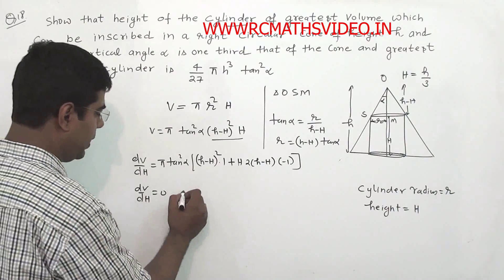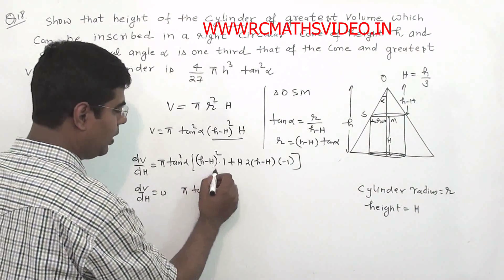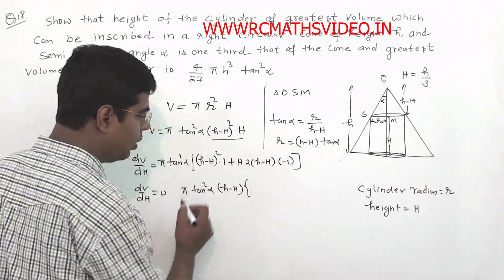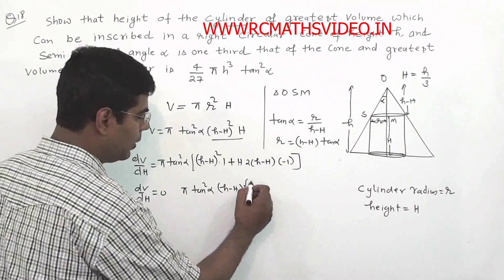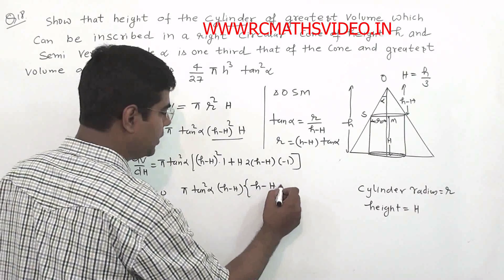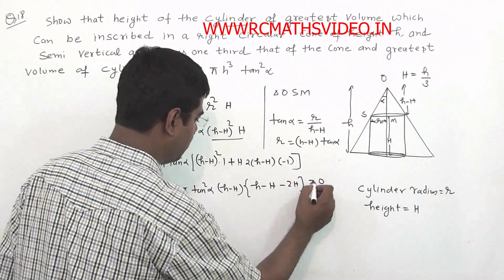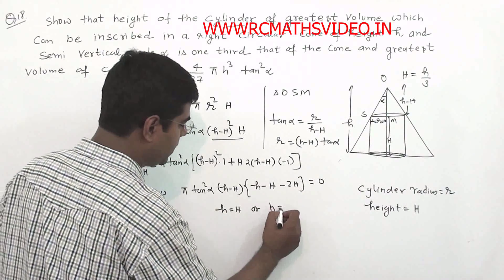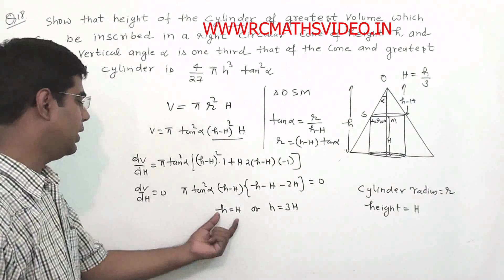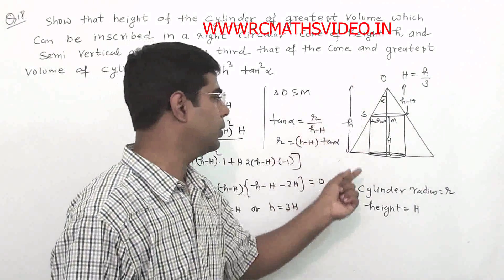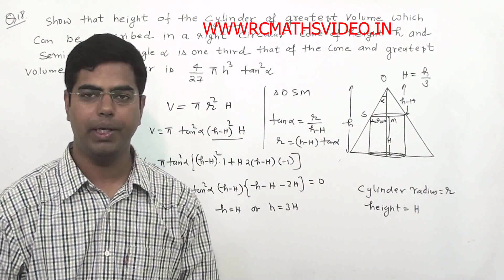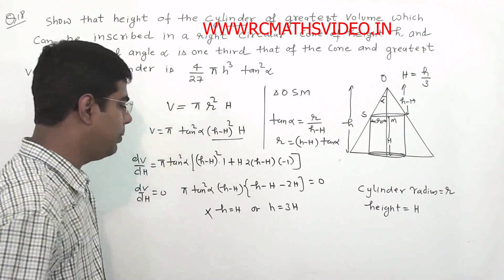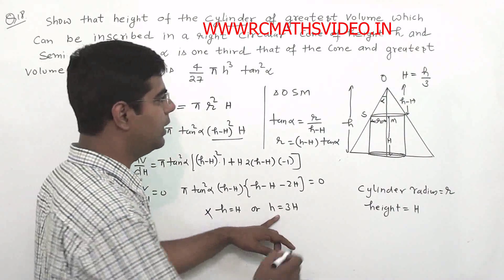Setting dV/dH = 0, we get π tan²(alpha) × (h − H) × [(h − H) − 2H] = 0. This gives H = h (rejected) or h − 3H = 0, so H = h/3. H = h is rejected because if the cylinder height equals the cone height, the cylinder cannot be inscribed.